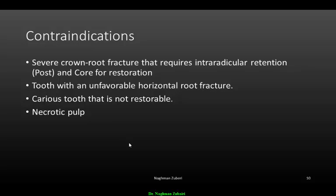The contraindications of apexogenesis include: severe crown-root fracture requiring intra-radicular retention such as post and core for restoration, where it is difficult to provide a permanent restoration; teeth with an unfavorable horizontal root fracture; carious teeth that are beyond repair or restoration; and necrotic pulp. For necrotic pulp in the immature dentition, we have a different treatment modality called apexification, which will be discussed in the next lecture.